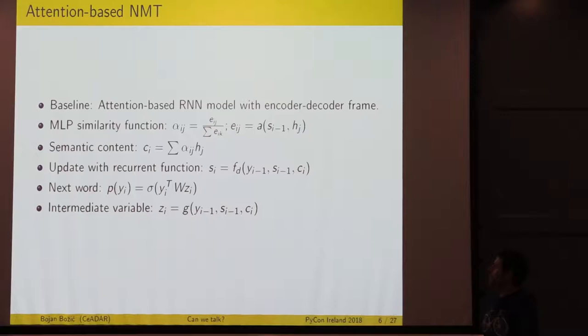We can use it in combination with the hidden layer to get the semantic contents, the semantics of all words that surround our word, and update it with a recurrent function. We get the next word by using a softmax function with a word vector and word parameter matrix. We go through several steps until we get the best match for the word.